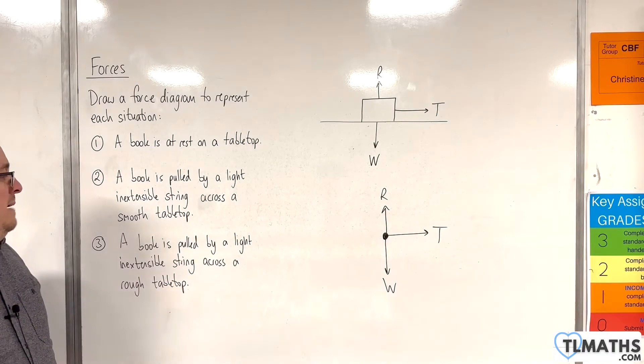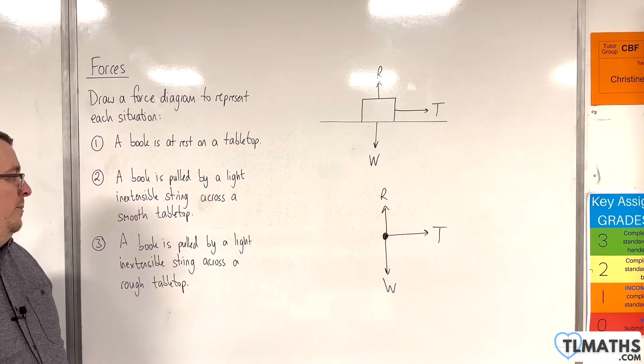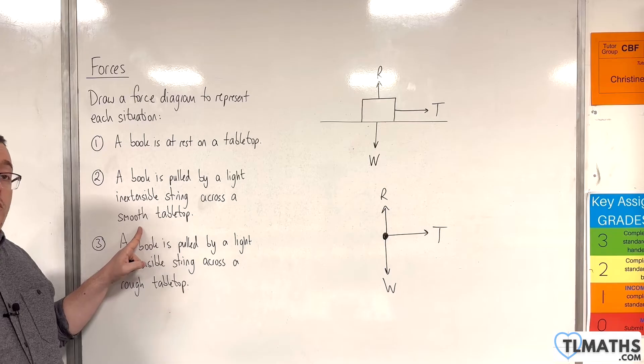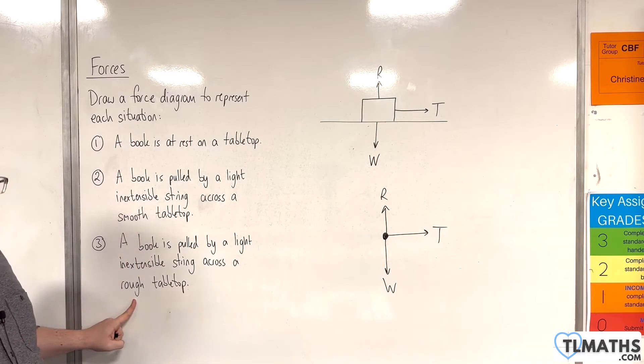For number three, a book is pulled by a light, inextensible string across a rough tabletop. So previously, we had a smooth tabletop, which meant that there was no friction. But now that the tabletop is rough, there is friction.